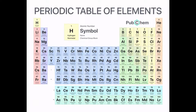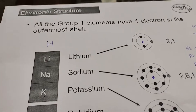Assalamu alaikum, my name is Sarah. Today we are going to study about trends in the periodic table. We have discussed in a previous video that there are eight groups and seven periods in the periodic table. Today we will discuss about the group one and group seven trends.